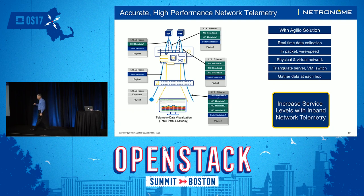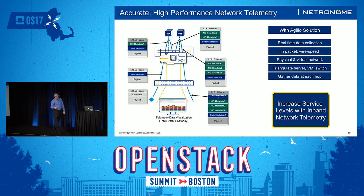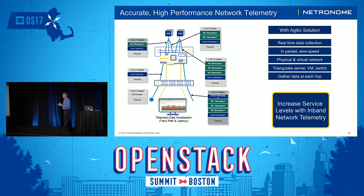As the packet comes in, goes through a switch and hits our NIC, we can add telemetry data to that. As it wraps through, you can see two virtual machines. Once upon a time, every single packet would leave the server, go up to a switch, come back down to another server. Today we don't see that — a packet can stay inside a server in that east-west mindset and go from virtual machine to virtual machine. With Agilio, you can add real-time data collection at wire speed because the packet is inserted on the fly. You can triangulate between your server, VM, and your switch — especially with a programmable switch — and gather data at each hop, getting far more telemetry information than previously possible.